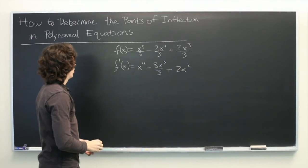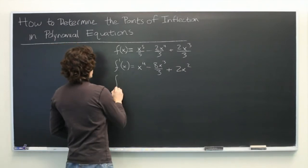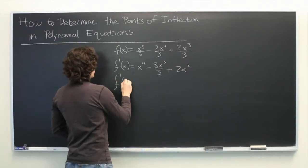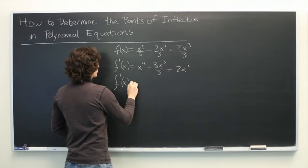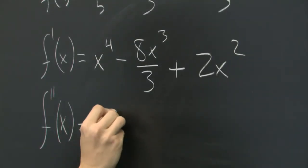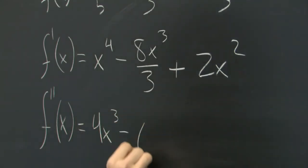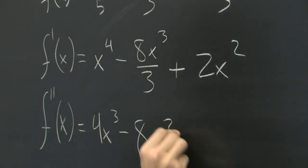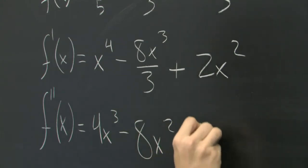Okay. Let's go ahead and take the second derivative. So, we get 4x^3 - 8x^2 + 4x.